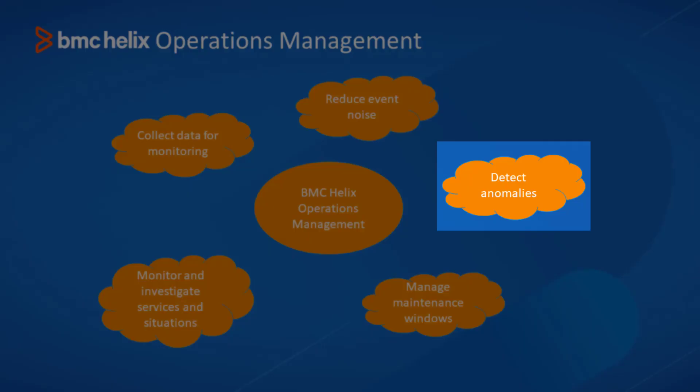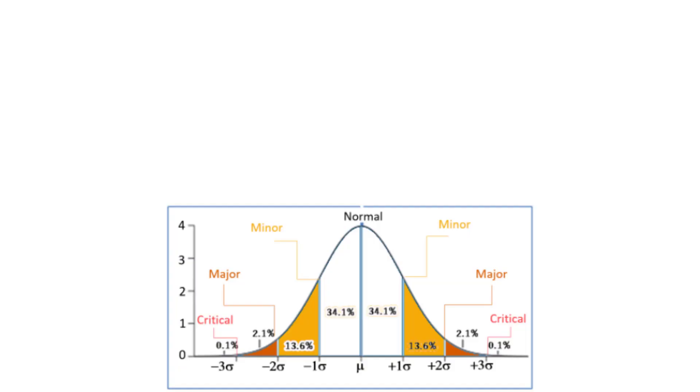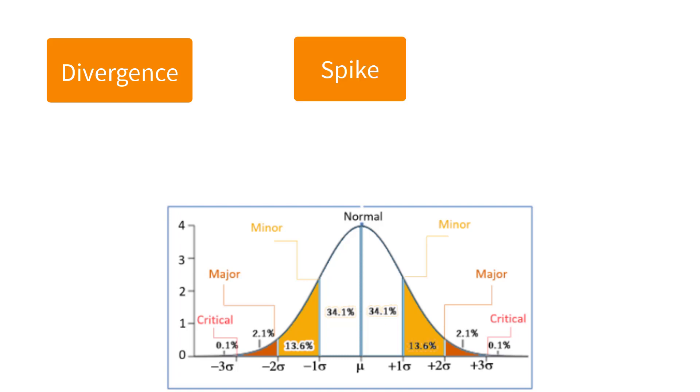Detecting anomalies in your infrastructure is another goal that you can achieve with the product. Anomalies are observations that diverge from a well-structured data pattern. An anomaly can be a spike in the time series data.